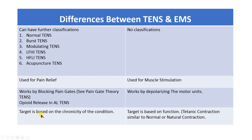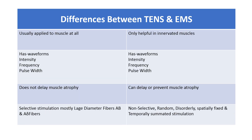For TENS, the target is based on the chronicity of the condition — you can have acute, subacute, and chronic pain, and apply different types of TENS accordingly. For EMS, the target is based on function, specifically to achieve a tetanic contraction similar to a normal or near-normal contraction. TENS can be applied to any muscle, while EMS is helpful only in innervated muscles — this is a very important distinction.